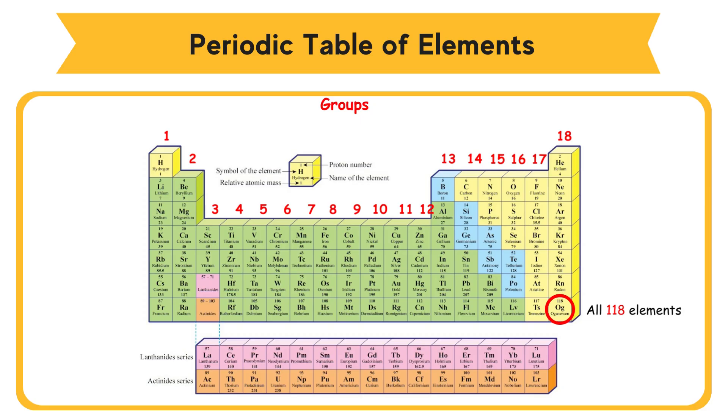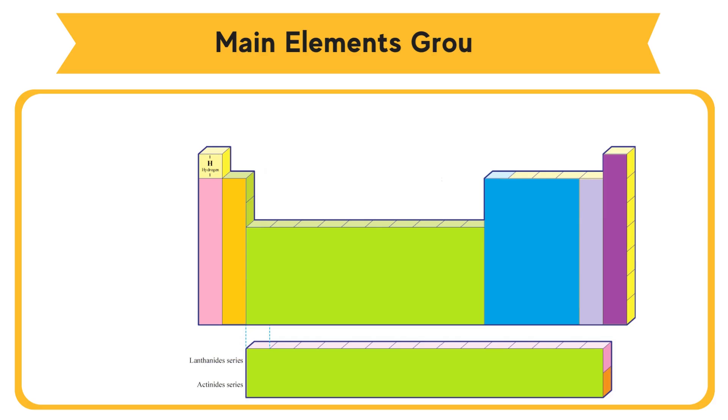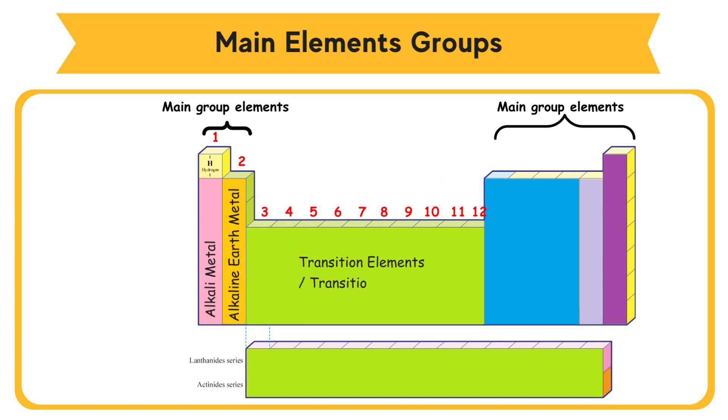There are 18 groups in the Periodic Table of Elements. Main Elements Groups: Group 1 - Alkaline Metal, Group 2 - Alkaline Earth Metal, Group 3-12 - Transition Elements or Transition Metals, Group 17 - Halogen, Group 18 - Inert Gases or Noble Gases.